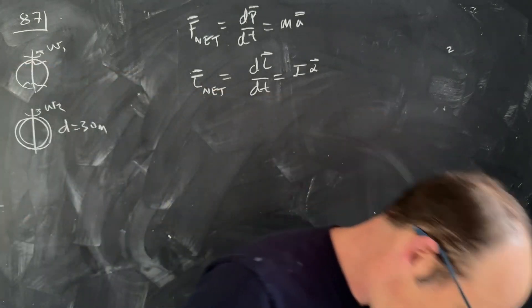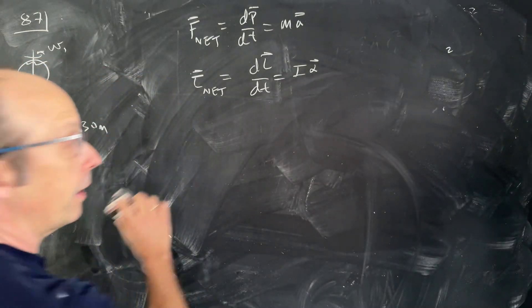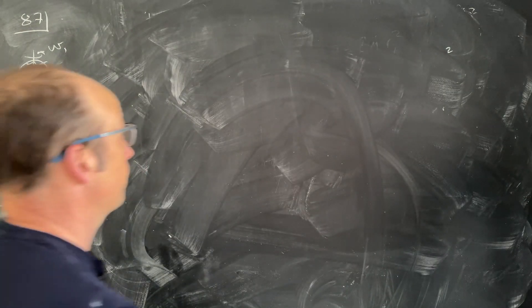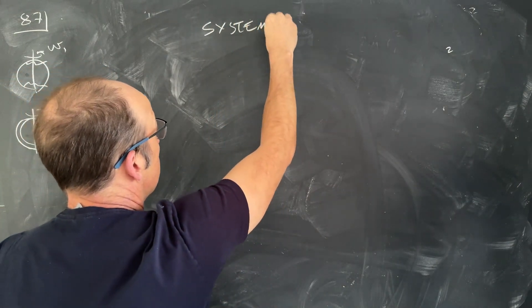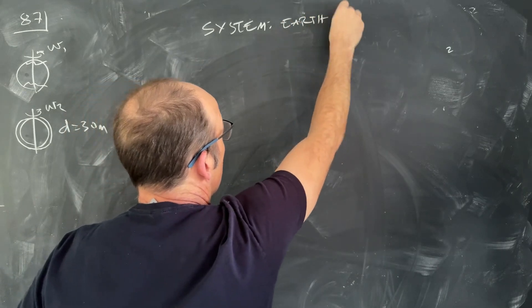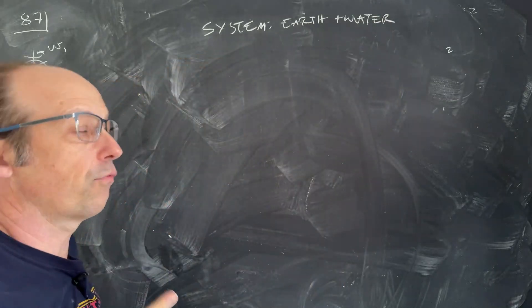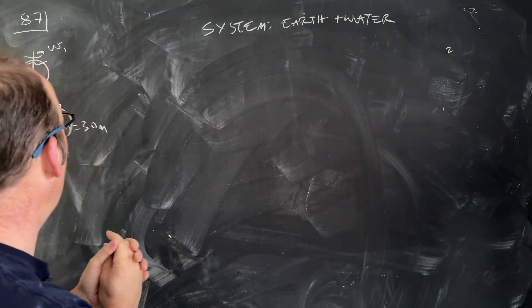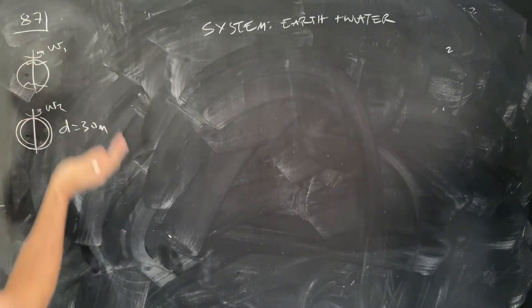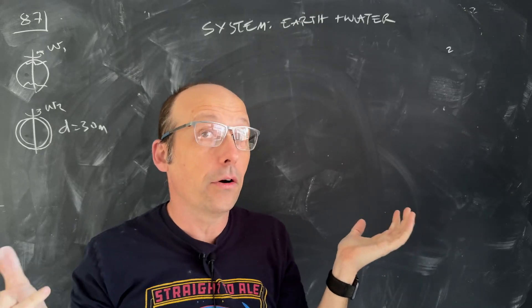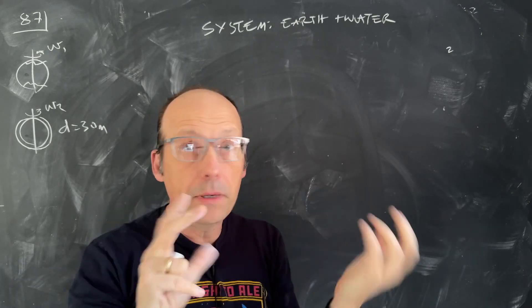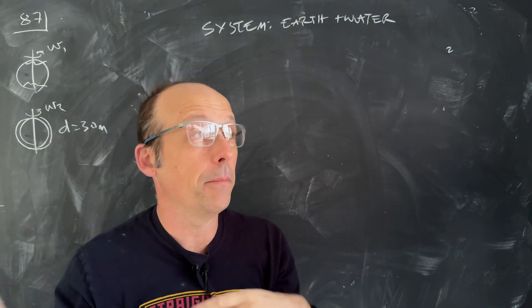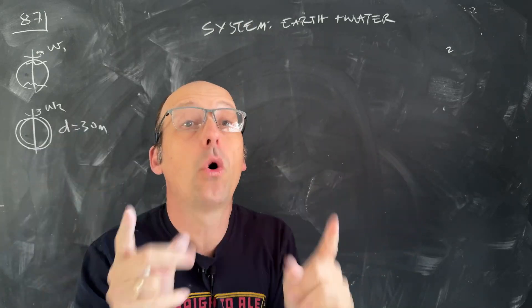Now let's solve the problem. Consider the spinning Earth — my system is the Earth plus the water. There are no net external torques: the sun and moon exert forces, but assuming uniformly distributed mass, those forces produce no net torque. So the net torque is zero.